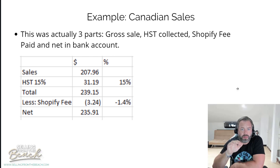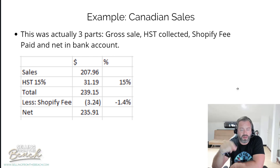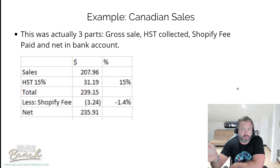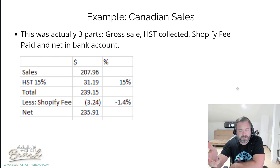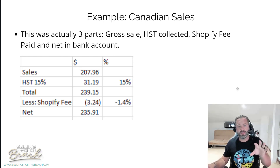Now remember, sales taxes in Canada are charged based on the ship-to location. So if you only ever sold in one province, you can always assume the 15%. But if you're selling all across the country, you've got 5%, 13%, 15% — a lot of different variables. This example I'm going to walk through uses the 15% rate.